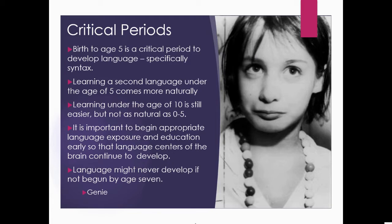Language may never develop if a child is not exposed to it by age seven. A tragic example is Genie, who suffered extreme abuse — isolated in a room, tied to a chair, and cut off from society. When she was finally freed, she could point to objects and name them like 'bottle' or 'ball,' but she never developed syntax or the fluency we have with language.